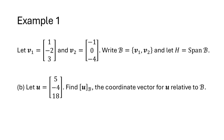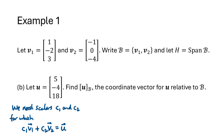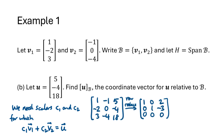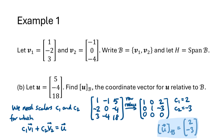Now that we have a basis, let's talk about coordinates. Let u be the vector (5, -4, 18) and find the coordinates of u relative to basis B. We're looking for scalars c1 and c2 such that c1 times v1 plus c2 times v2 equals u. We set up and row reduce an augmented matrix, giving the solution c1 equals 2 and c2 equals negative 3. So the coordinate vector u sub B is the vector (2, -3). Notice that u is in R^3 with three entries, but u sub B has two entries because the basis has two vectors.